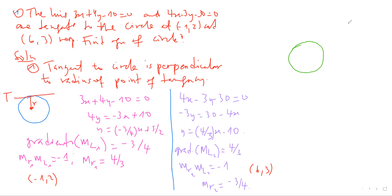So this problem is: if you have a circle, and then you have a tangent — call this Line 1 — and then another tangent — call this Line 2 — can we find the equation of the circle? The idea is simple: because you know Line 1 is a tangent, you can find a perpendicular line to the center, find the radius, and then use ideas of perpendicularity and gradients to find the circle.